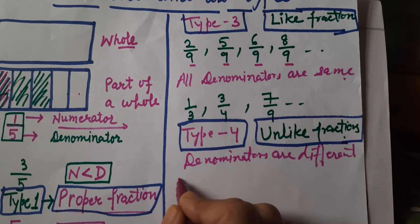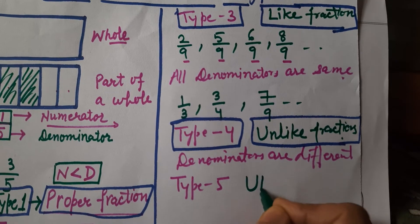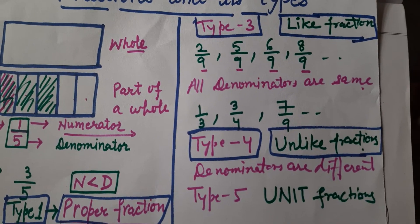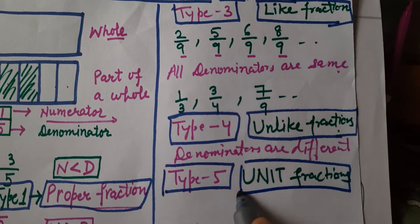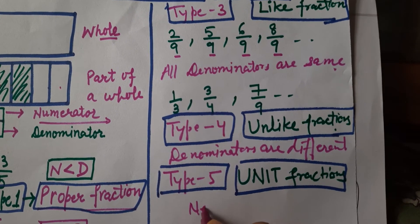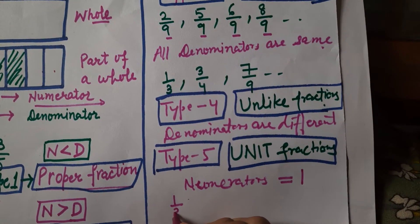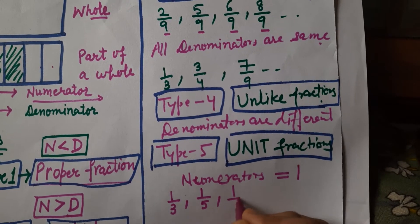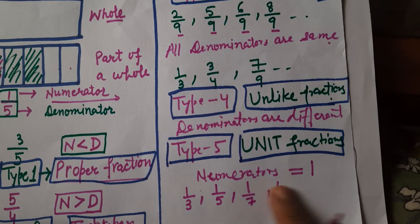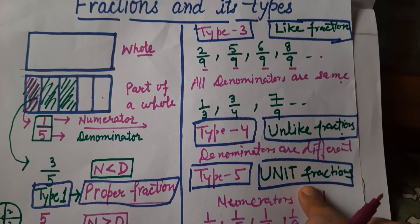Now let's discuss type five, which is unit fraction. In unit fractions, the numerator is equal to one. Like one by three, one by five, one by seven, one by nine — in all these fractions the numerator is equal to one. So these fractions are known as unit fractions.